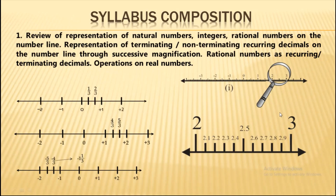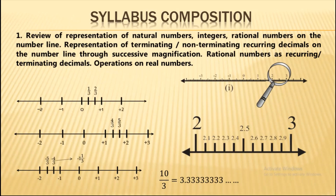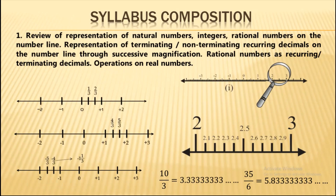We will also see rational numbers as recurring terminating decimals. For instance, 1/3 gives 0.3333... — the decimal does not terminate but the digit repeats. Similarly, 35.6̄ has a repeating block. Such decimal expansions are called recurring terminating decimals, and we will learn to represent these on the number line as well.